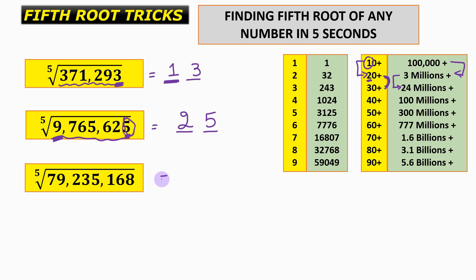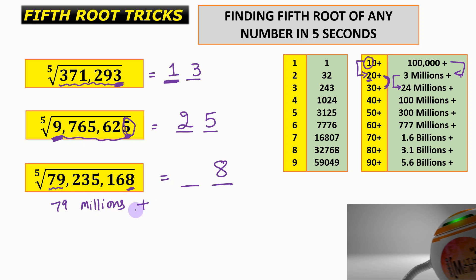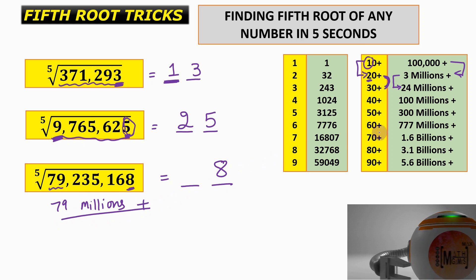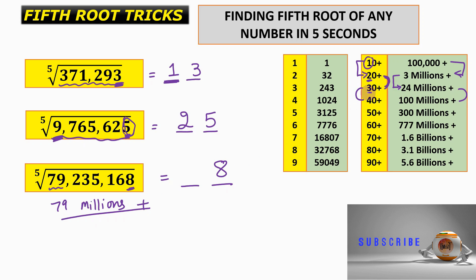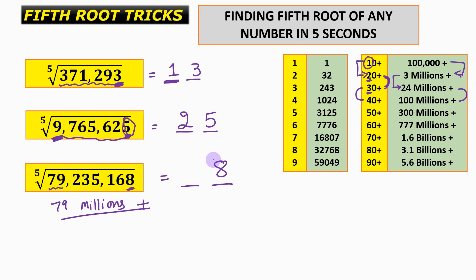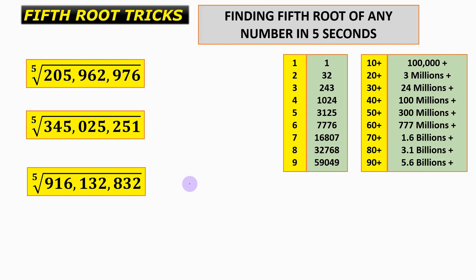For the next question, the unit place is 8, so we write 8. This number is approximately 79 million, which lies between 24 million and 100 million, so the result lies between 30 and 40. We pick 3 for the tens place, giving us a fifth root of 38.